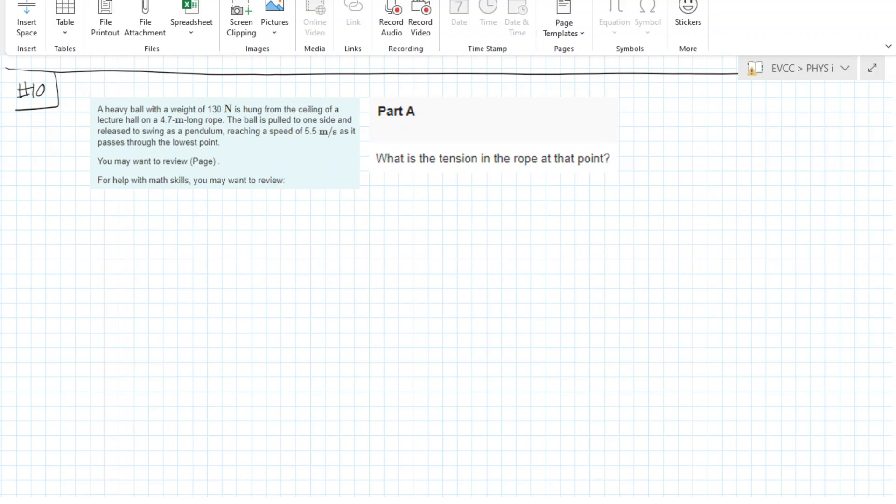For this problem, a heavy ball with a weight of 130 newtons is hung from the ceiling of a lecture hall on a 4.7 meter long rope. The ball is pulled to one side and released to swing as a pendulum, reaching a speed of 5.5 meters per second as it passes through the lowest point. We want to find the tension in the rope.